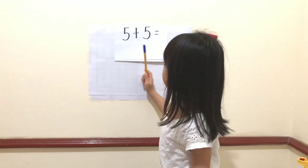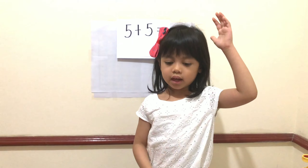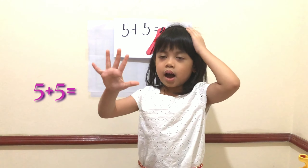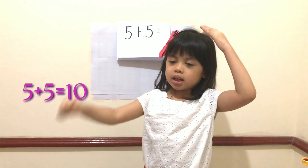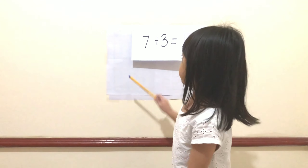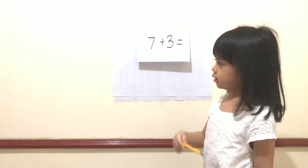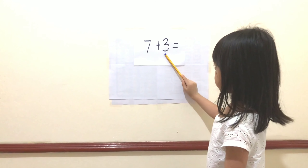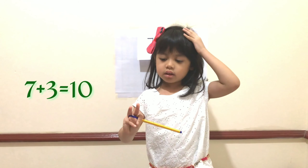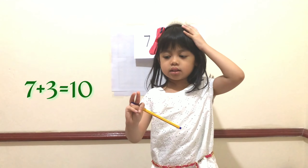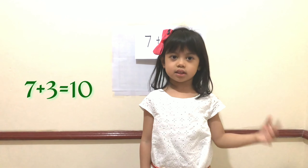5 plus 5. 5 in the head plus 5. 5, 6, 7, 8, 9, 10. So the answer is 10. Last question for the easy round — 7 plus 3. 7 in the head plus 3. 7, 8, 9, 10. So the answer is 10.